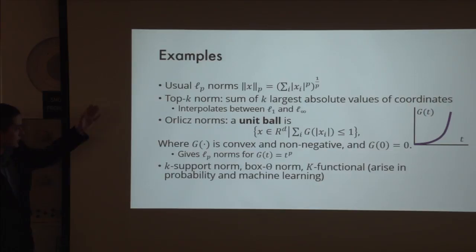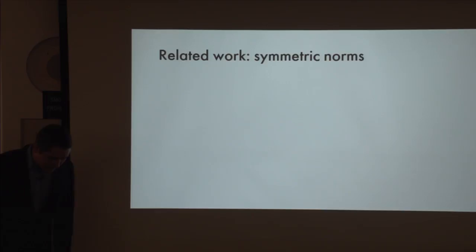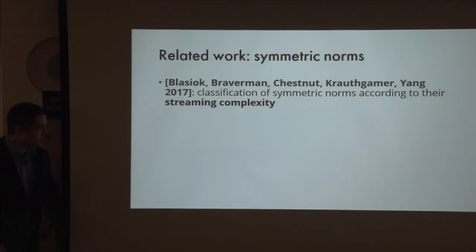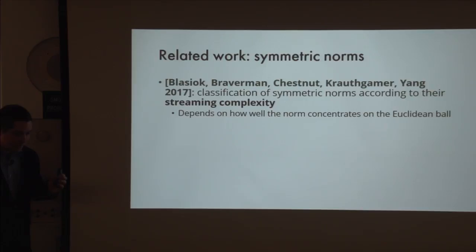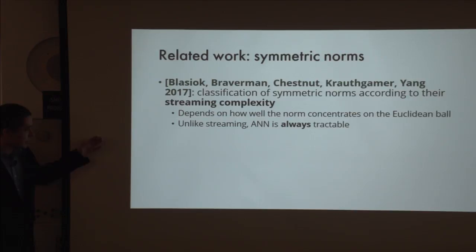Let me mention related work. There is a recent paper that classifies symmetric norms according to their streaming complexity: you maintain a vector, receive updates, and want to maintain an estimate of the norm. This generalizes known streaming results such as frequency moments. They show that the space complexity depends on how well the norm concentrates on the Euclidean ball. To contrast: unlike streaming where some norms are easy and some are hard, approximate nearest neighbor search is always easy for symmetric norms.